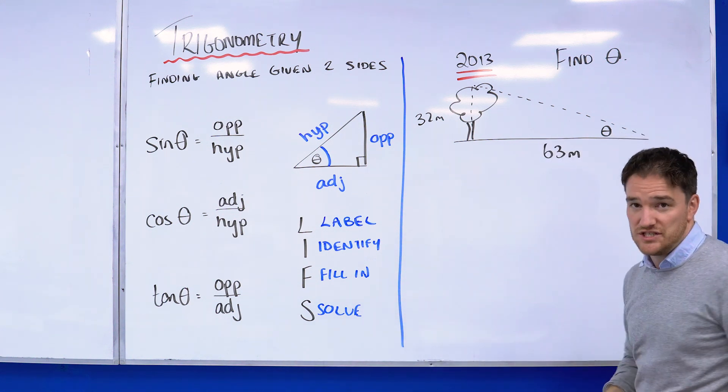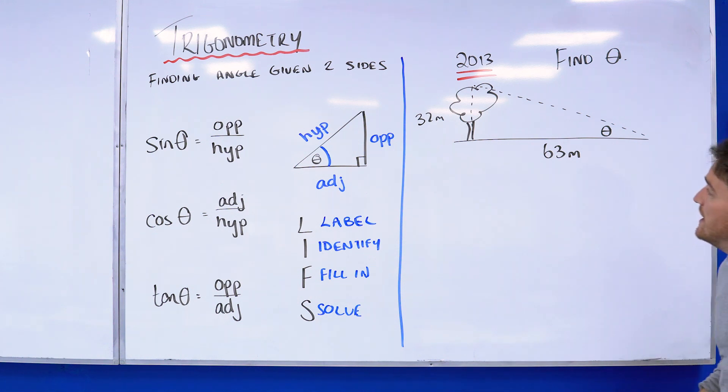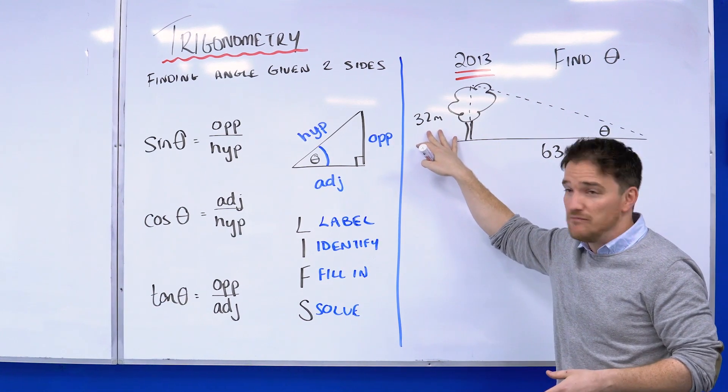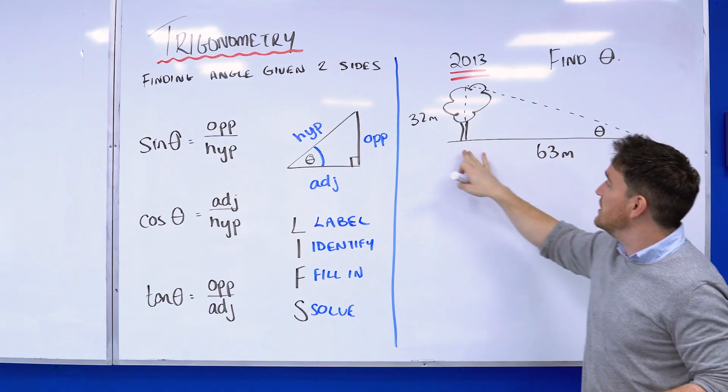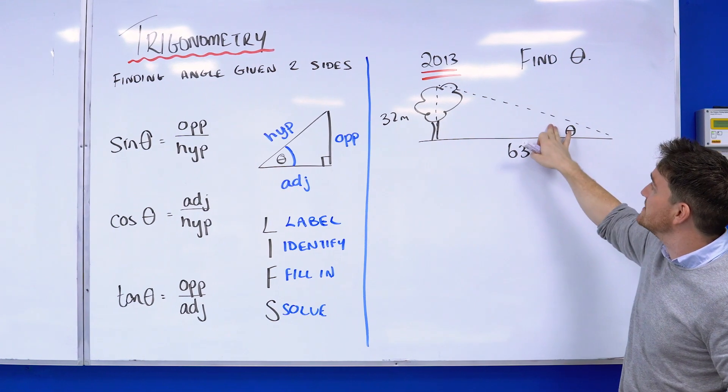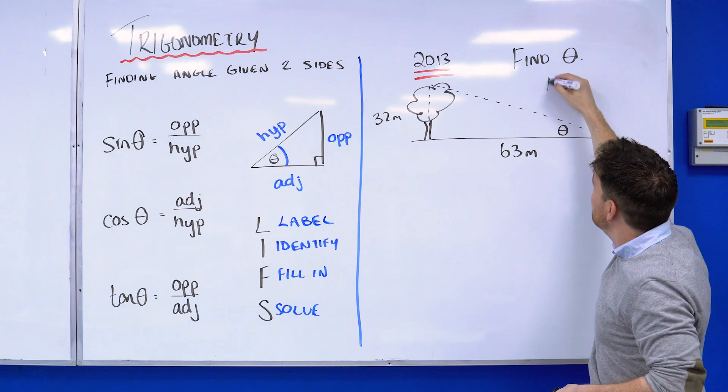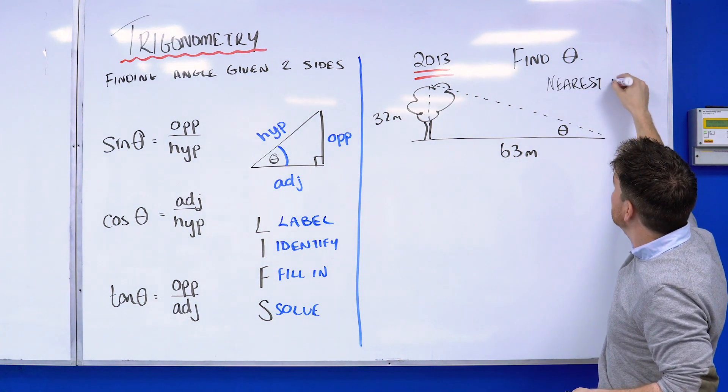Let's take a look at an exam style question that came up in 2013. You were given a problem with a tree—you were told in the wording of the question that the tree was 32 meters tall, and you were shown a diagram with 63m, and you're asked to find this value theta to the nearest minute.